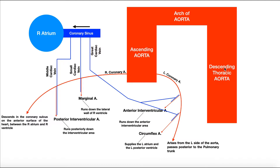This would be the descending aorta, and there are two parts of that: the descending thoracic aorta, which is the part above the diaphragm, and once it pierces the diaphragm it becomes the abdominal aorta. Also remember, coming off of that arch of aorta, there are three large arteries: the brachiocephalic artery, then the left common carotid artery, and then the left subclavian artery.